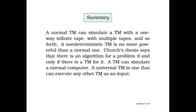In short, a normal Turing machine can simulate a Turing machine with a one-way infinite tape, with multiple tapes, and so on — there is a lot a single Turing machine can do. A non-deterministic Turing machine has the same power as a regular one. The Church thesis says that if there is an algorithm for a problem then there is a Turing machine, and vice versa — a Turing machine can simulate a regular computer. Finally, a universal Turing machine can be built which can execute any other Turing machine given as input.